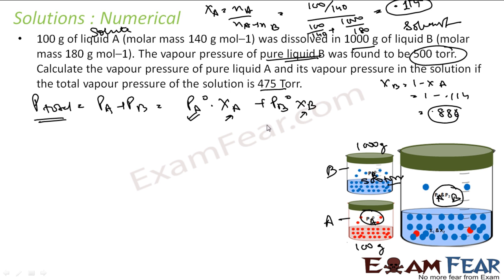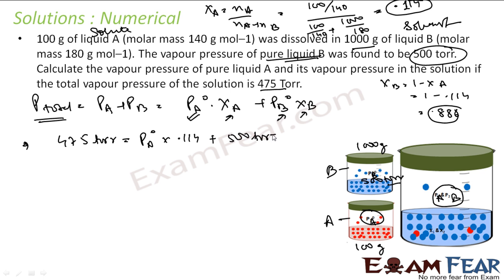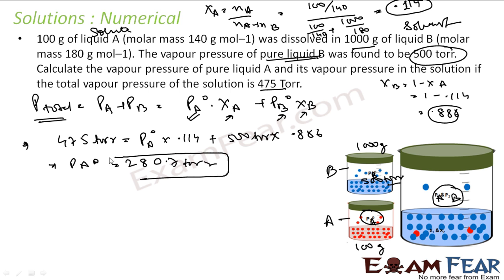X_B equals 1 minus X_A, that is 1 minus 0.114, which equals 0.886. P_B° is given as 500 Torr. Now substituting into the equation: 475 Torr equals P_A° × 0.114 plus 500 Torr × 0.886. Solving this equation gives P_A° as 280.7 Torr, which is the answer.